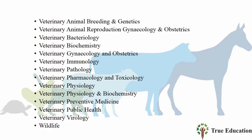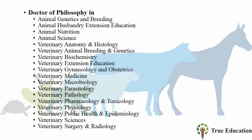Wildlife. Next one: Doctor of Philosophy in Animal Genetics and Breeding, Animal Husbandry Extension Education, Animal Nutrition, Animal Science, Veterinary Anatomy and Histology, Veterinary Animal Breeding and Genetics, Veterinary Biochemistry, Veterinary Extension Education, Veterinary Gynecology and Obstetrics.